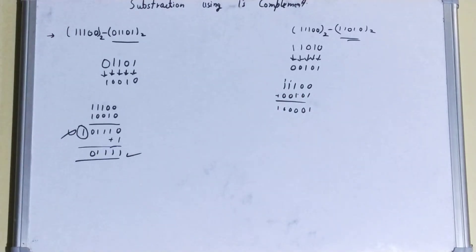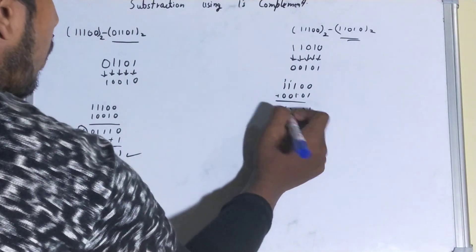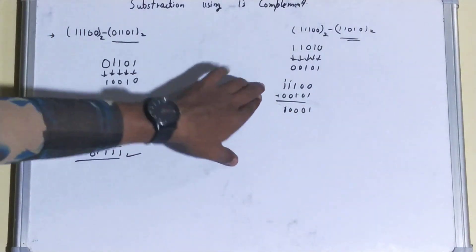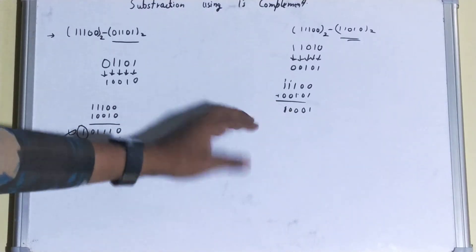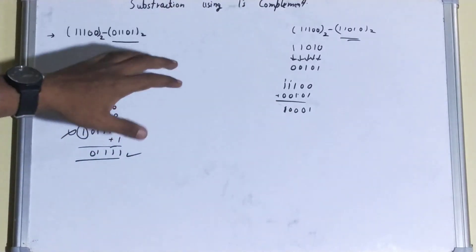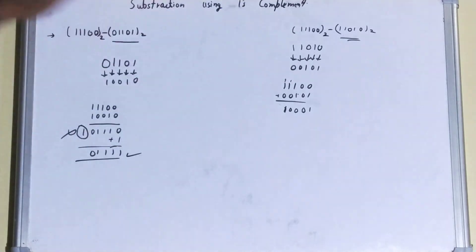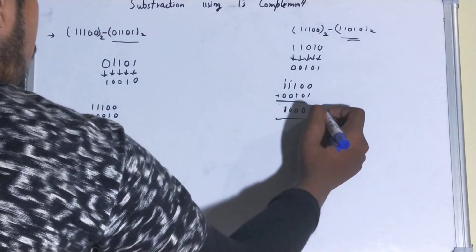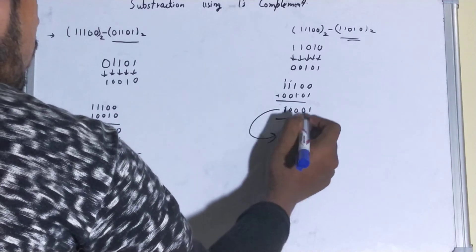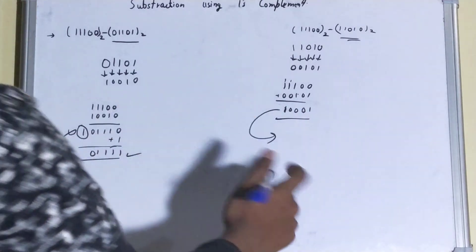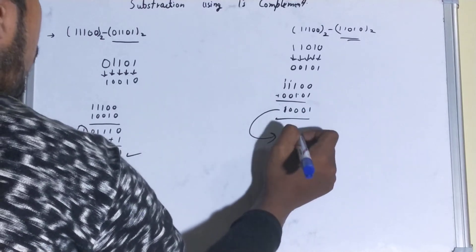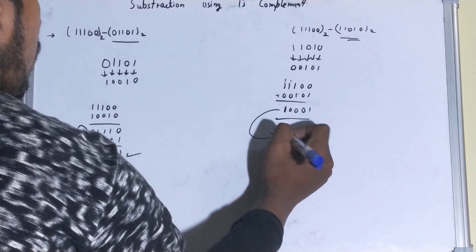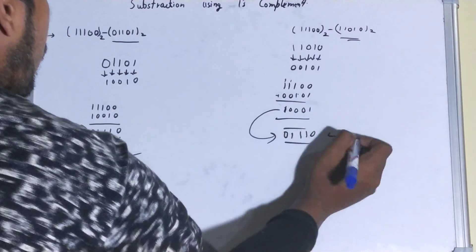But suppose we hadn't got a carry — if the result stopped there within the same number of digits, say five digits, then you don't need to do the carry step. Instead, you have to find the 1's complement of the result again — 1 becomes 0 and 0 becomes 1 — and that will be your final answer.